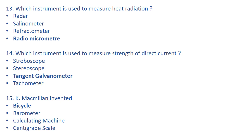Which instrument is used to measure heat radiation? The right answer is radiomicrometer. Radar is an instrument used to detect the direction and speed of any object by means of radio waves. Salinometer is used to determine the salinity of a solution. Refractometer is used to measure refractive indices.